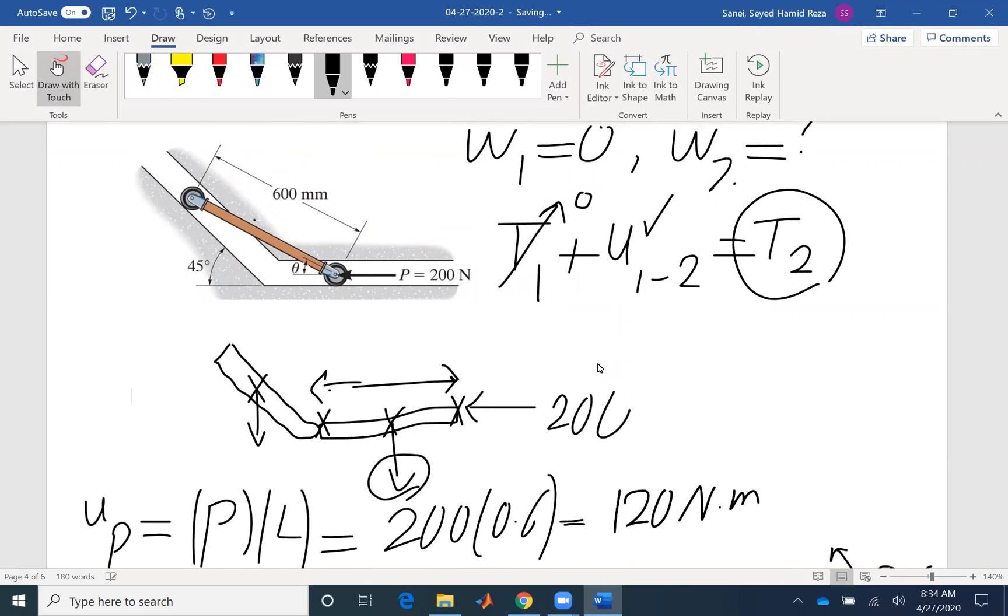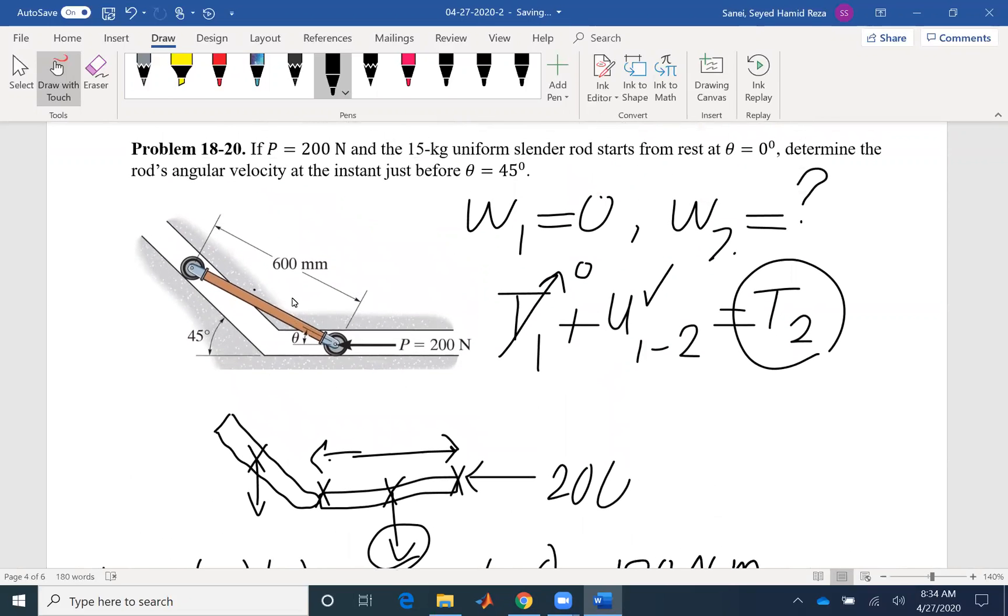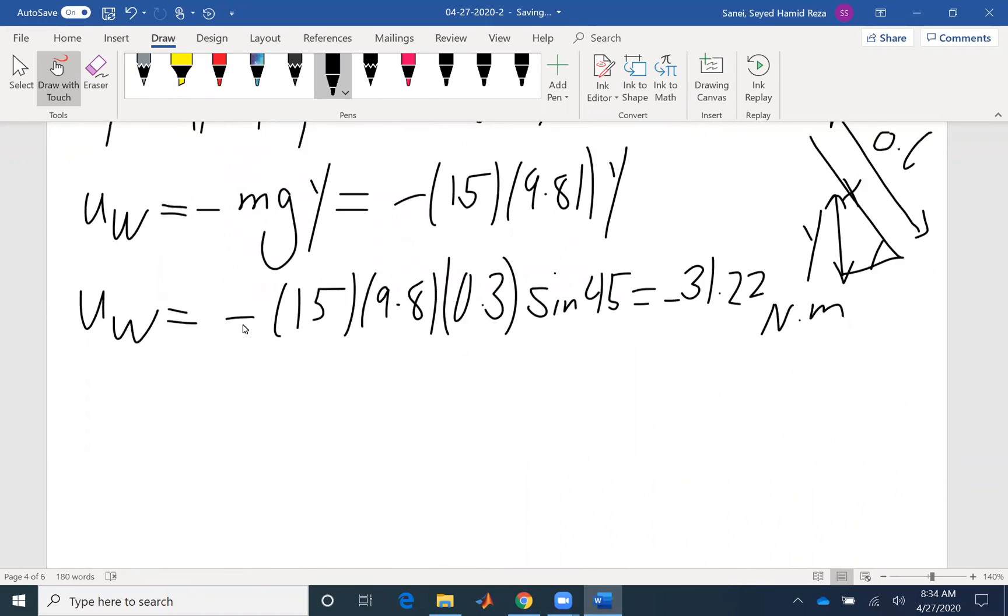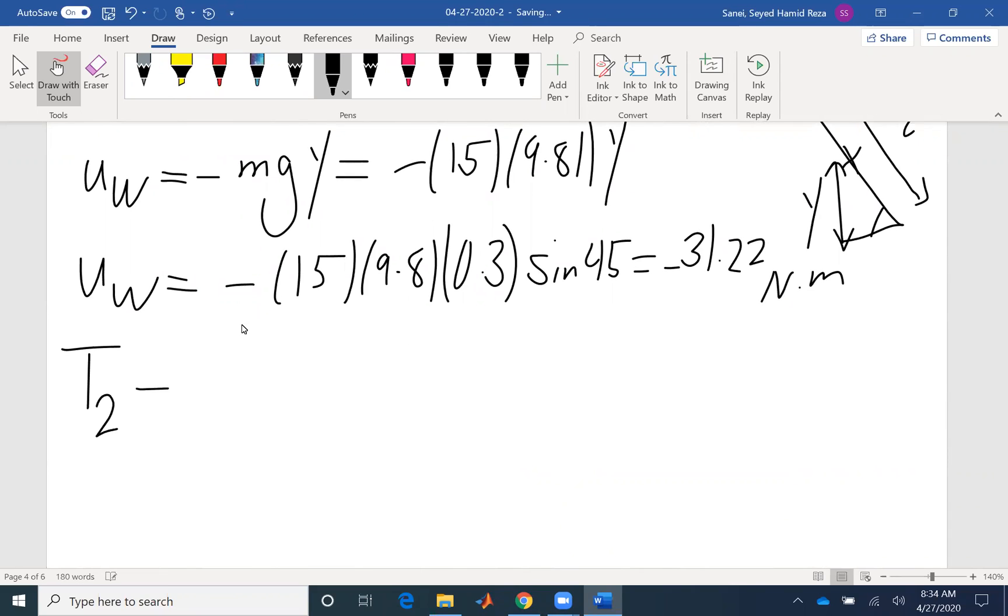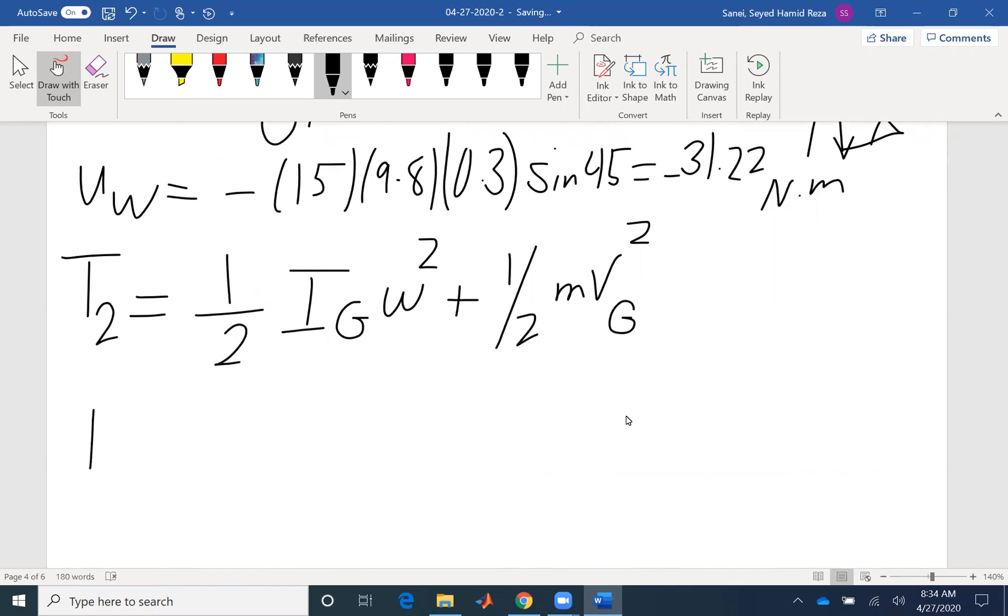Now I need to find the kinetic energy. Our system has one component only, the rod. But the rod has both rotational component and also the linear component of the velocity because the center of gravity will have a velocity as well. So kinetic energy at position two would be half of I_G times omega squared plus the linear component, half m times the velocity of center of gravity squared.